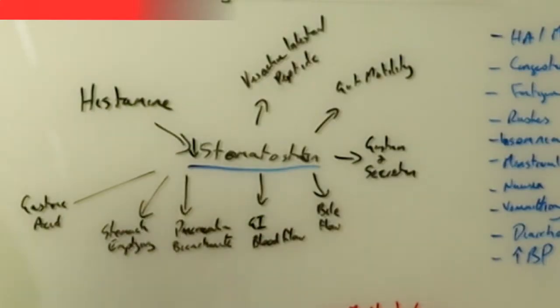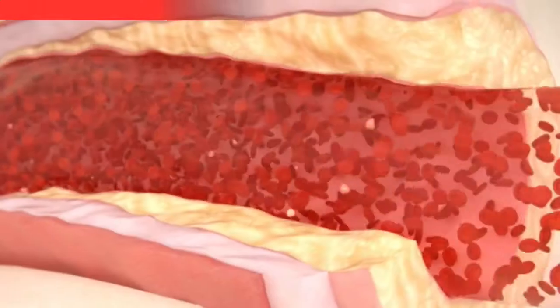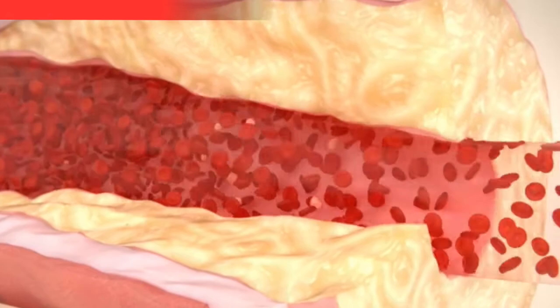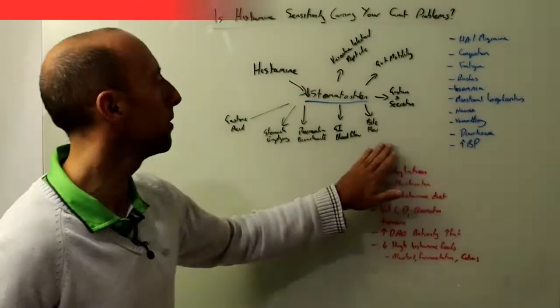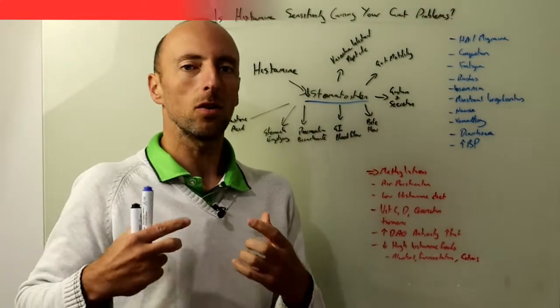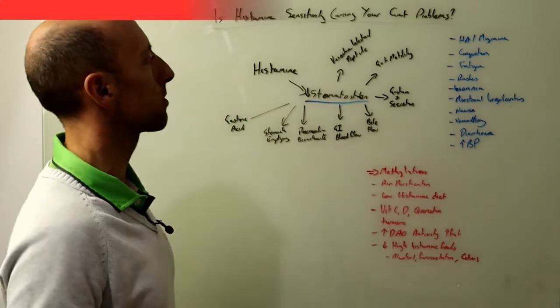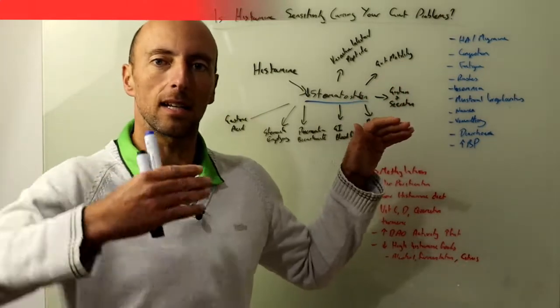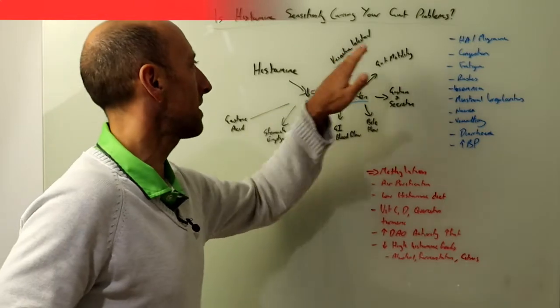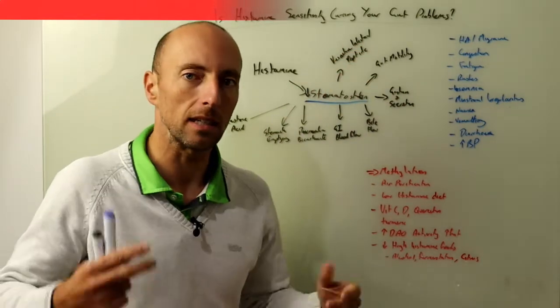So it has an inhibitory effect on stomach acid, on the emptying of your stomach, on pancreatic bicarbonate, on blood flow through your entire digestive system, on the gut hormones gastrin and secretion, on the actual motility and movement of the gut, and on vasoactive intestinal peptide.